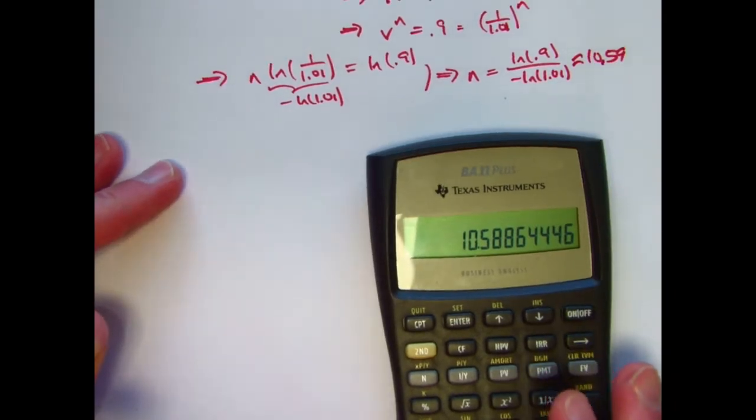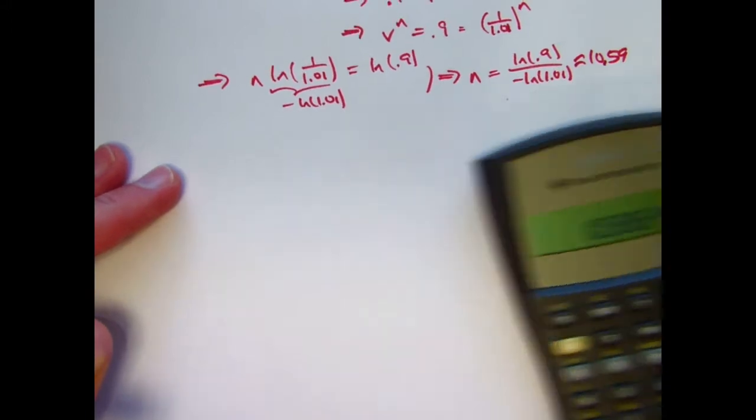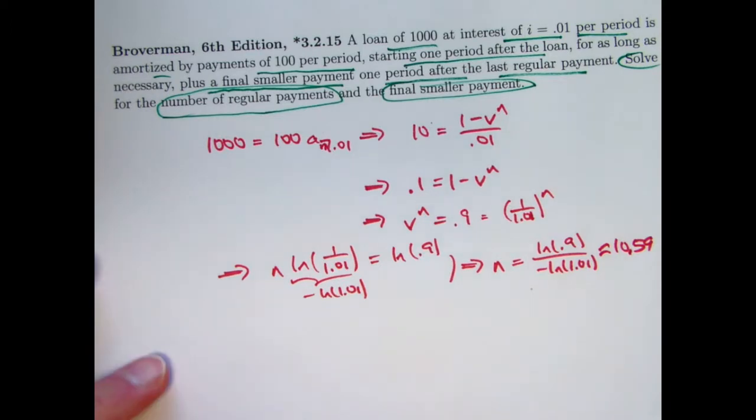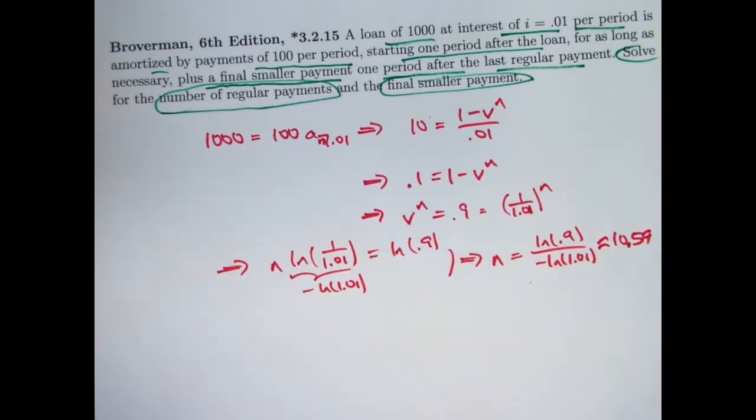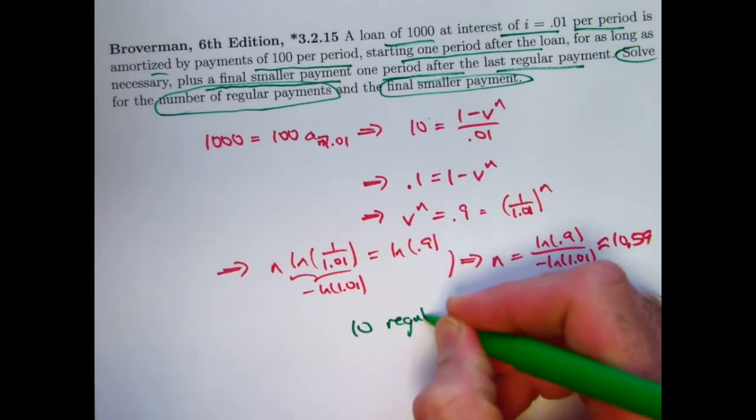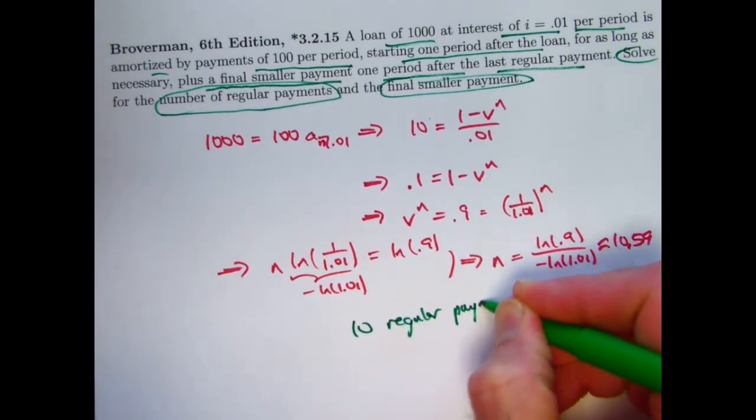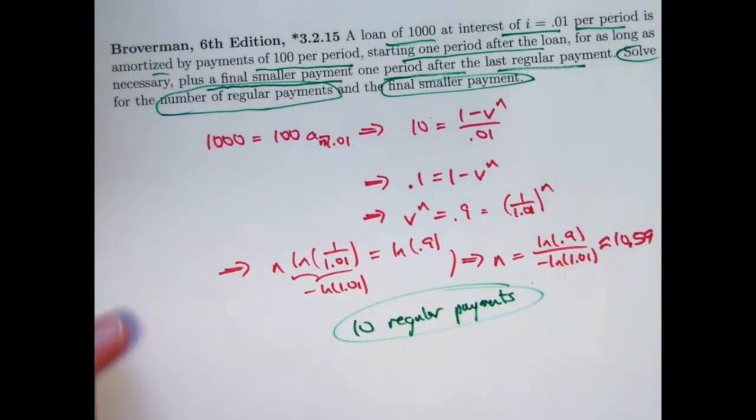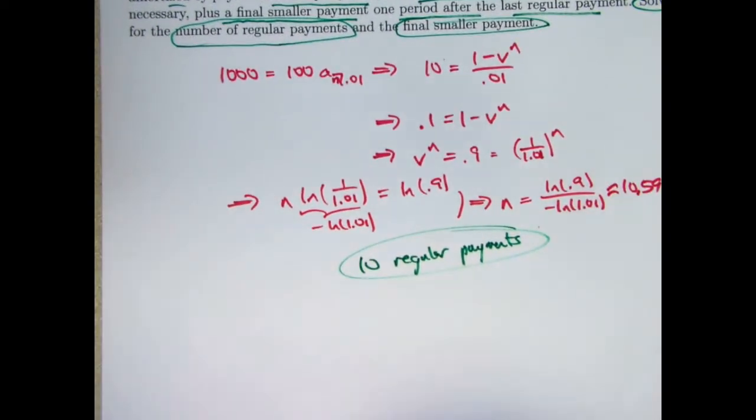So we've got 10 regular payments of 100 and then a final smaller payment. So part of the answer to the problem is n equals 10, 10 regular payments of 100. How would we find out the value of the final payment at time 11?